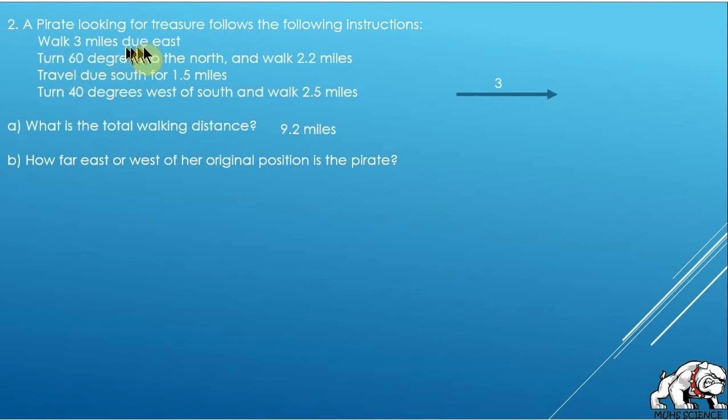Walk three miles due east, there's three miles due east. Turn 60 degrees to the north and walk 2.2 miles, so I'm facing east, I turn 60 degrees north, I walk 2.2 miles.